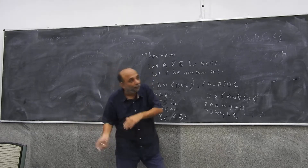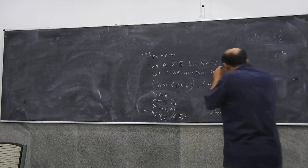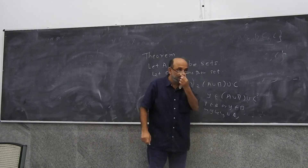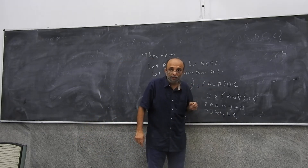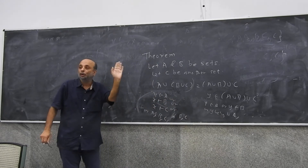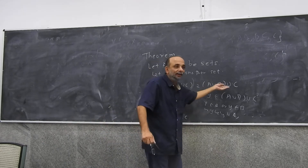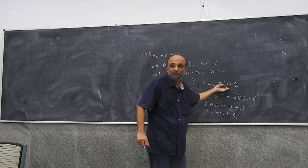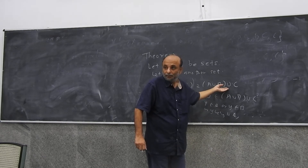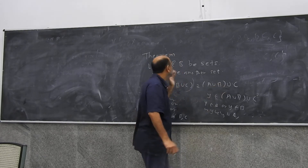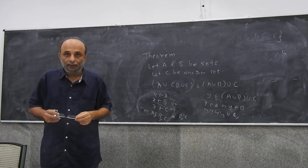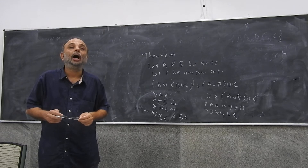Can you think of some Y which belongs to this collection but not to this collection? Is it possible? Because if something belongs to this collection, it either belongs to A, or to B, or to C. In which case, it is not possible that it does not belong to this collection by definition. Therefore, the two collections are identical.